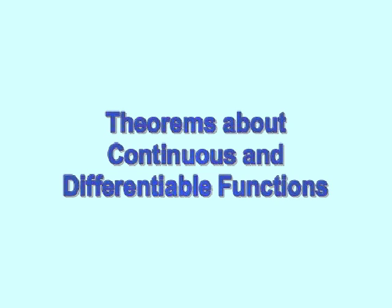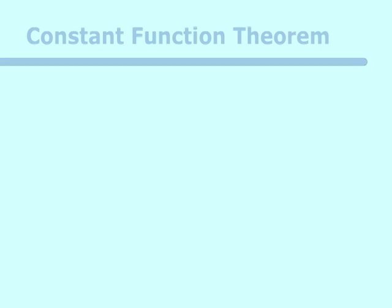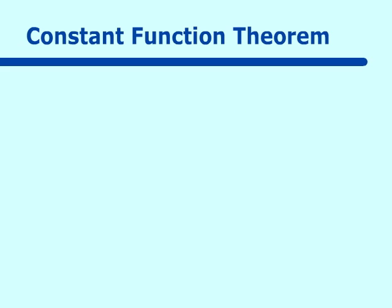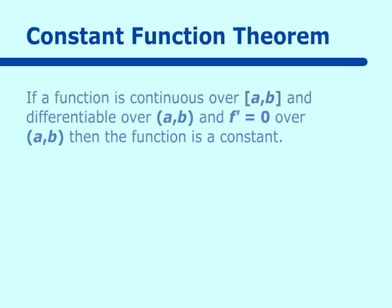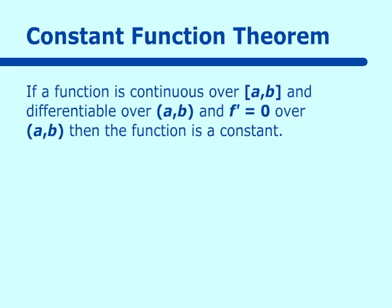Our first theorem is the constant function theorem, and it reads: if a function is continuous over closed [a, b] and differentiable over open (a, b) — because the function cannot be differentiable at its endpoints — and f prime is equal to zero over open (a, b), then the function is a constant.